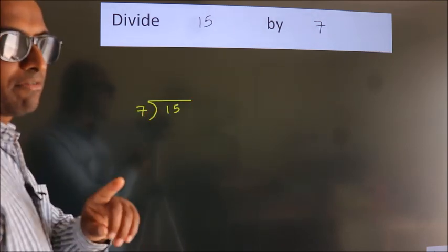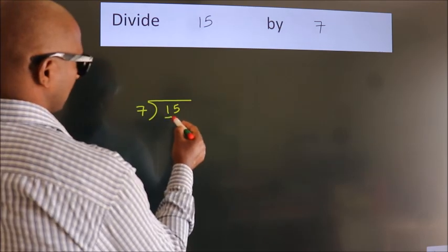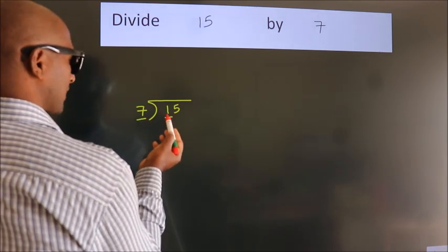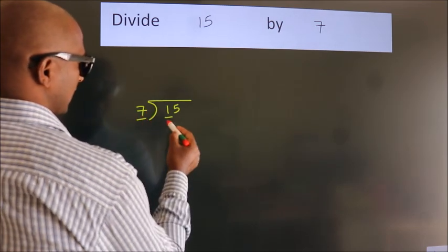Next, here we have one, here seven. One is smaller than seven, so we should take two numbers.